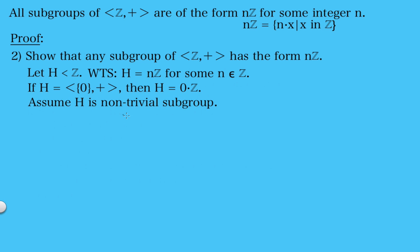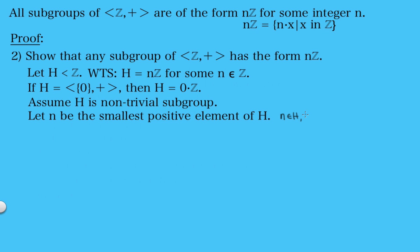Now since we've shown that the trivial group can be written in this form, let's assume that our subgroup is the non-trivial subgroup. We're going to let n be the smallest positive element of our subgroup H — so n is an element of H, it's greater than 0, and n is less than every other positive element of H. We know that such an n exists because we're assuming it's not the trivial group, so there's a non-zero element, and there must be a positive element since the group can't consist only of negative elements, as it must be closed under inverses.